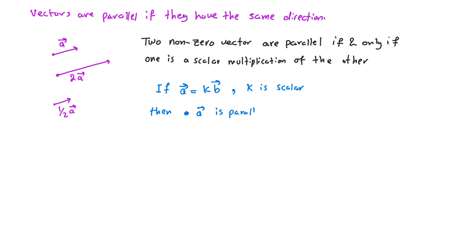Note that the k value, which is the scalar value, could be both positive or negative. If it's positive, the two vectors are pointing in the same direction; if k is negative, the vectors are pointing in the opposite direction. We can also write this as the magnitude of vector a equals the absolute value of k multiplied by the magnitude of vector b.